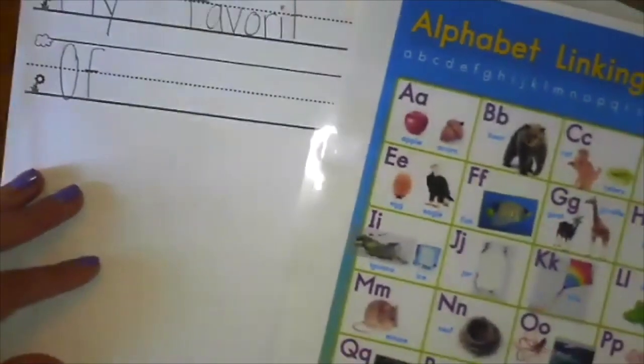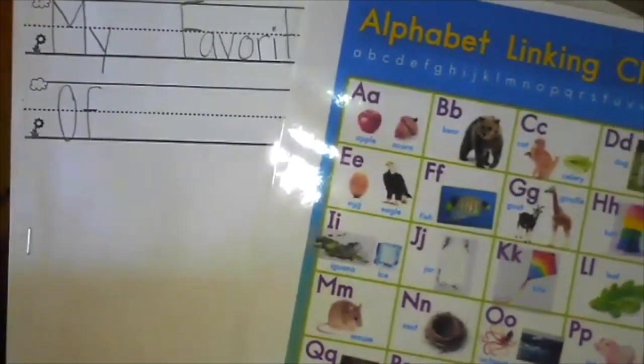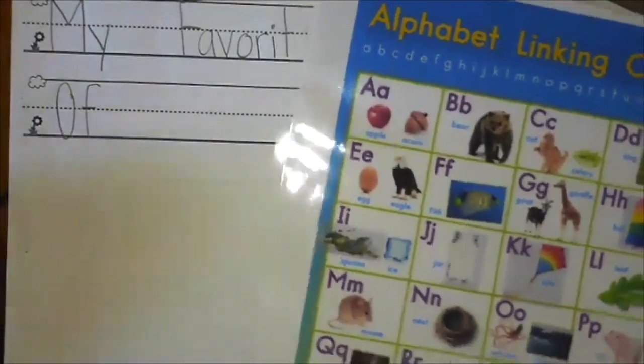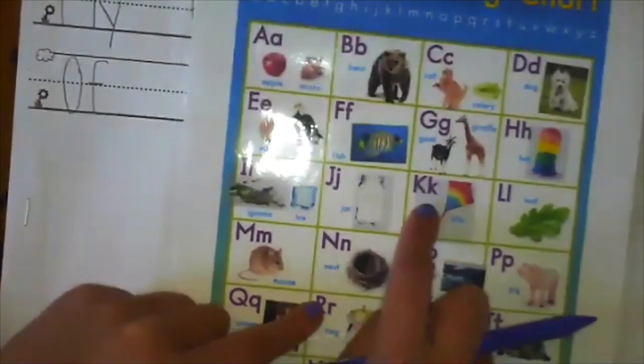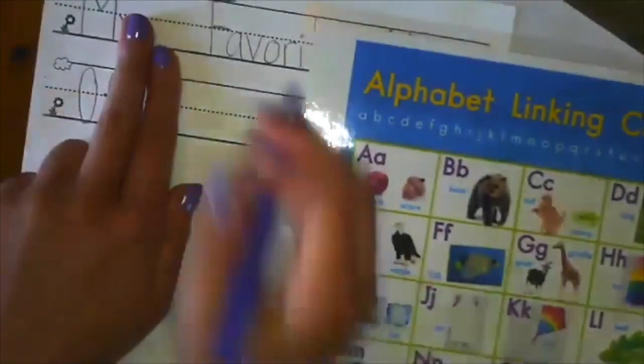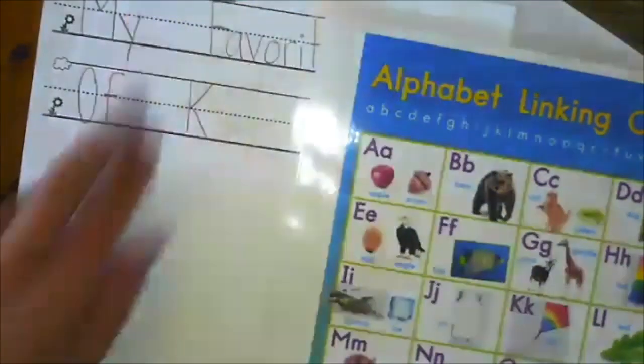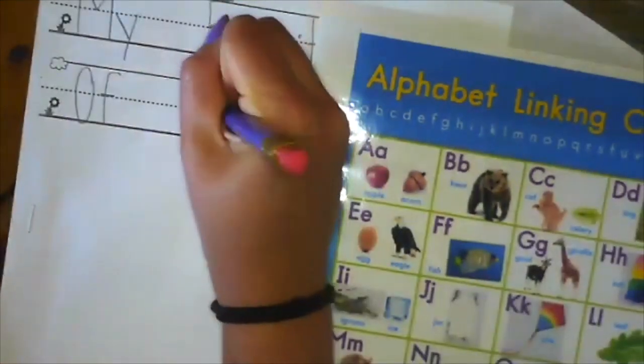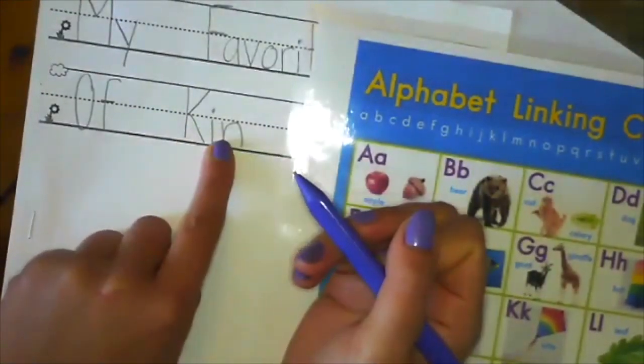Oh, I hear N. Kindergarten. Oh wait, that's not the first sound. Kindergarten, kindergarten, K-K-K-K-K-K. What do you hear next? Kindergarten. Oh, I hear the sight word IN. IN, kindergarten.